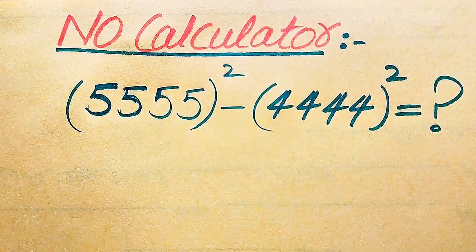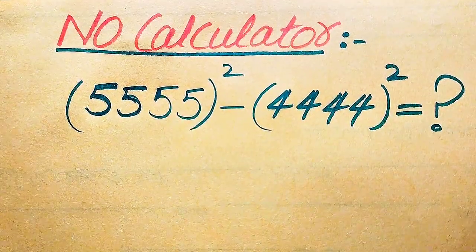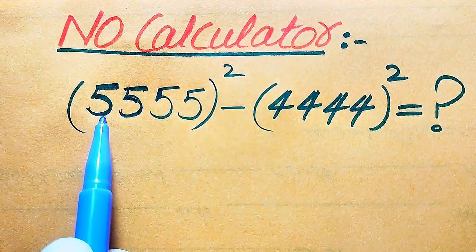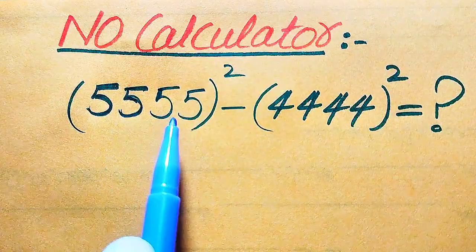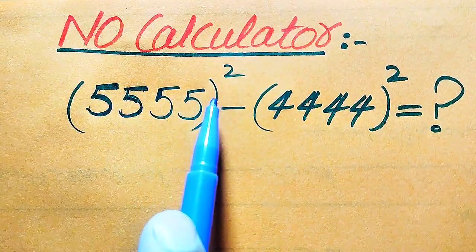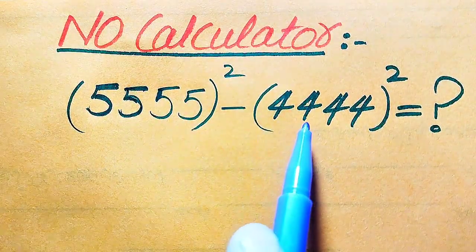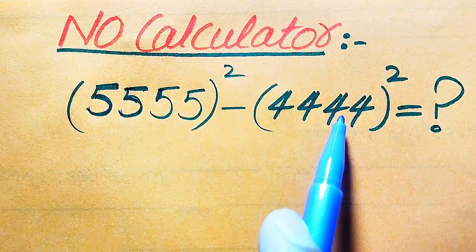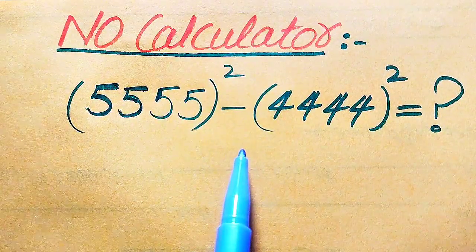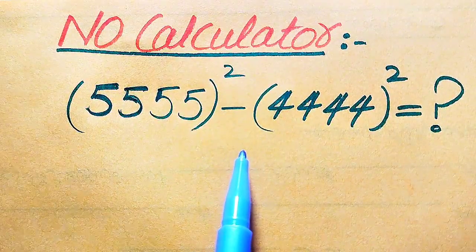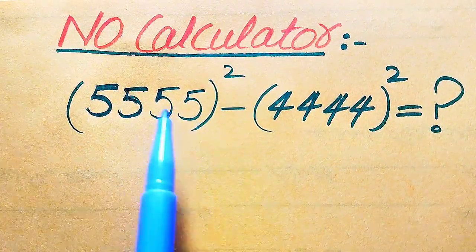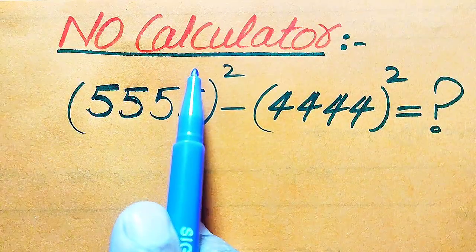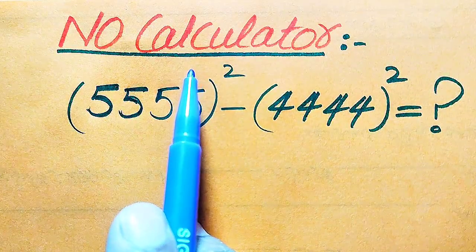Hello everyone. How to simplify this nice algebraic expression: 5555 squared minus 4444 squared. We want to write this algebraic expression in simplified form, but remember one thing — a calculator is not allowed in this problem.